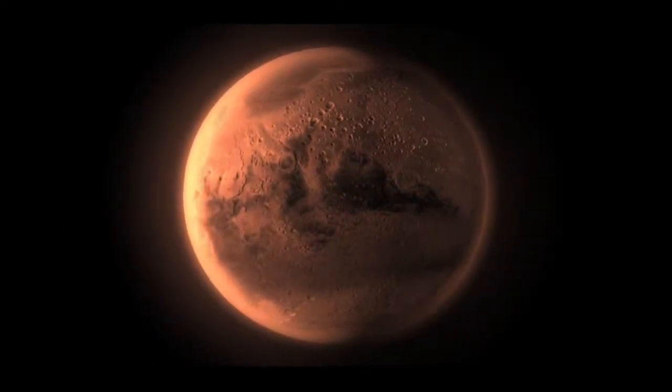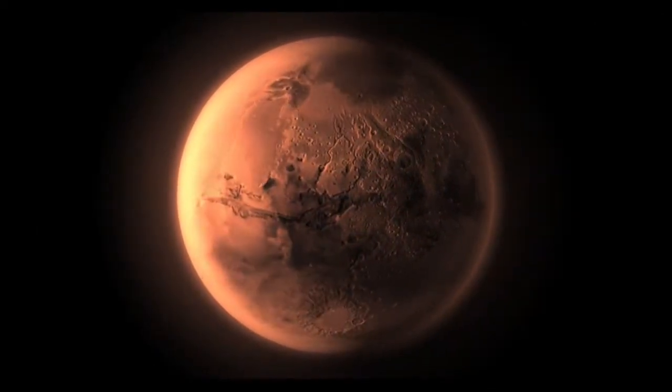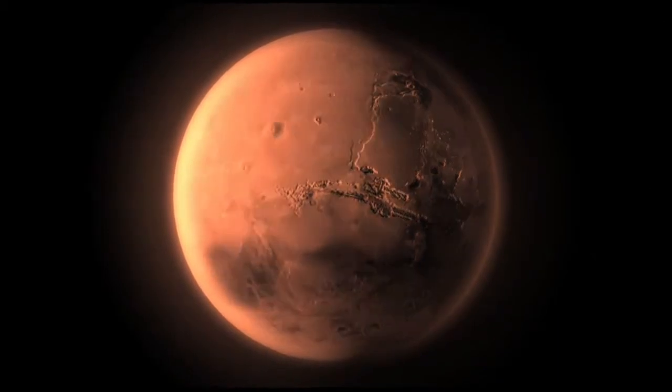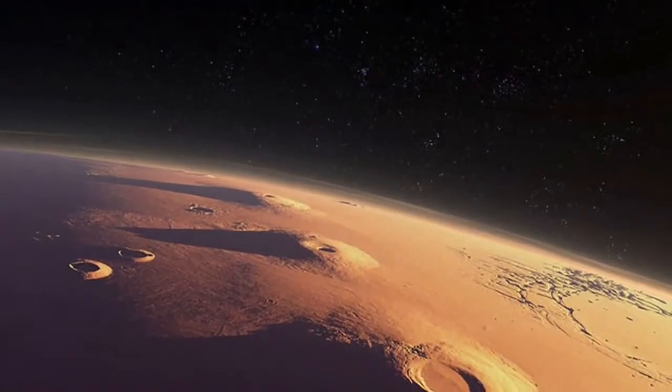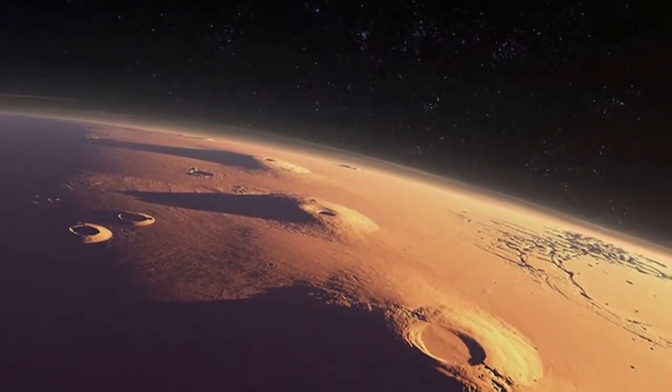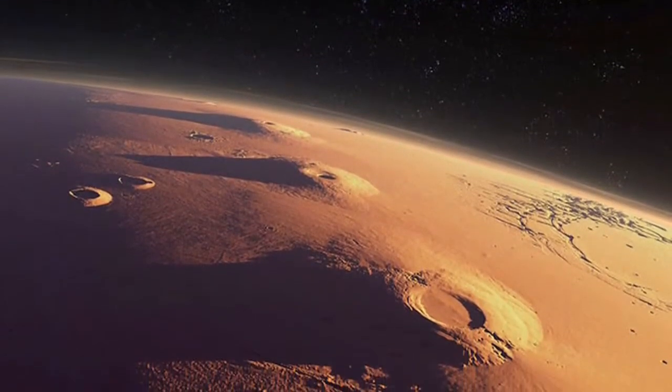Olympus Mons lies on the edge of another large feature on Mars, called the Tharsis Dome. It is on the Tharsis Dome that all the largest volcanoes on Mars are found. The Dome is a huge bulge on the surface of Mars that rises to a height of about ten kilometers.